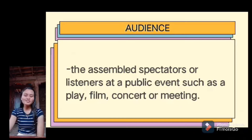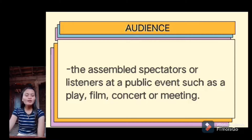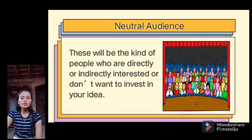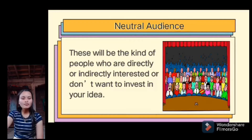Good day everyone. I am Michelle and Jesera, and I will discuss the types of audience. According to the dictionary, audience is the assembled spectators or listeners at a public event such as a play, film, concert, or meeting. In marketing, this is where you determine your ideal client. The first type of audience is the neutral audience — these are people who are directly or indirectly interested, or don't want to invest in your idea. They appear rational and engaged on the surface, but true neutrality is rare.